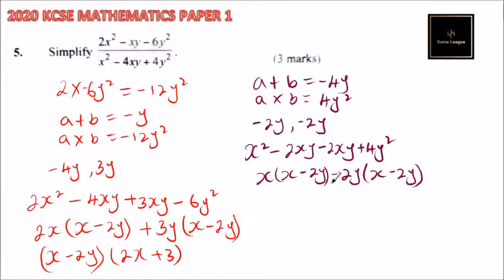So when you multiply negative and negative, you get positive. So you have now x minus 2y and we have x minus 2y.